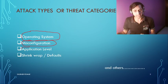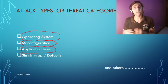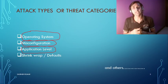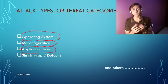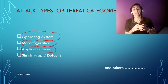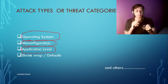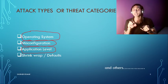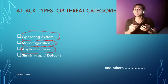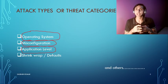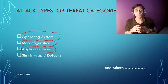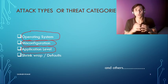The third category is application-level attacks. You may be using some application or software that has a vulnerability. Verify every application you use in your organization. Even for browsers — whether Firefox or Google Chrome — you should know their vulnerabilities, what patches to download, and how to make them more secure to prevent attacks like XSS or buffer overflow.